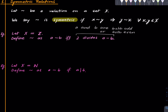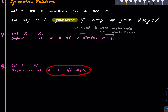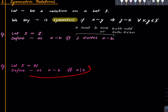Here is a non-example of symmetry. Suppose X is the set of all natural numbers and define a tilde b if and only if a divides b. This is non-symmetric because if a divides b it doesn't mean b divides a — b could be greater than a. So this is quite a non-symmetric relation.